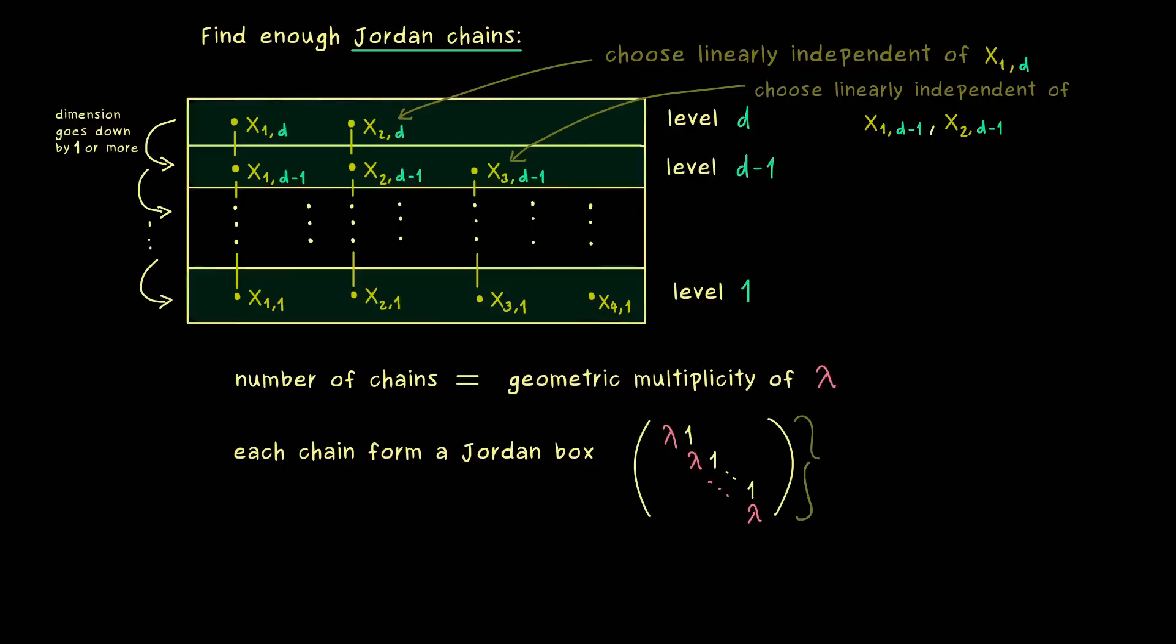And with that the proof is actually done, because we could just verify that all these chains are possible, and we can choose them linearly independent to get enough vectors out. It simply follows from the fact, that the generalized eigenspaces are nested in the sense we have already proven before. Therefore the only thing we have to check in the end, is that such a chain really gives the Jordan box in this form.